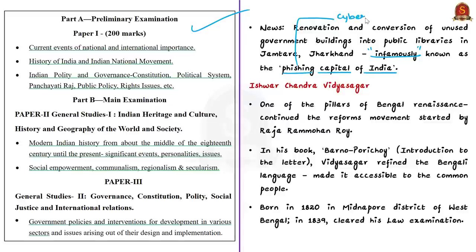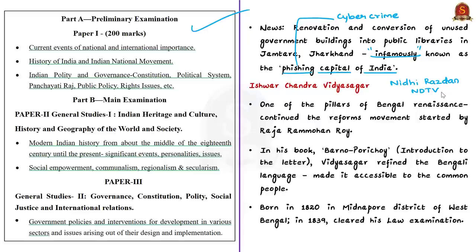In phishing, target individuals are contacted by email, telephone, or text messages by someone posing as a legitimate individual or institution. The purpose is to lure individuals into providing sensitive data like personally identifiable information, banking details, credit card details, or passwords. One recent highly professional phishing attack was referenced in newspapers — the attack on Nidhi Rajdan, who was working with NDTV. A person or group posed as Harvard University to recruit her as an associate professor to teach journalism. This attack went on for months before being discovered, after which a formal complaint was filed with law enforcement.